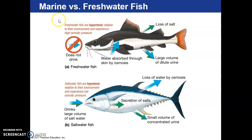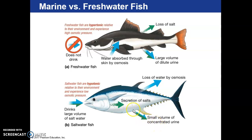Freshwater fish are hypertonic relative to their environment and experience high osmotic pressure. For saltwater fish, they actually drink in water and secrete salt back out through their gills, producing only a small concentrated amount of urine. The key difference is that freshwater fish use diffusion — they lose salt through their skin — while saltwater fish use osmosis to balance things out.